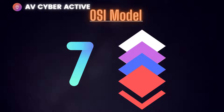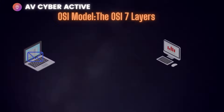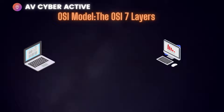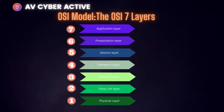Please remember that OSI is only a reference model that describes how information from a software application in one computer moves through a physical medium to a software application in another computer. Each of the seven OSI layers has a different function, and here's how the layers are structured.